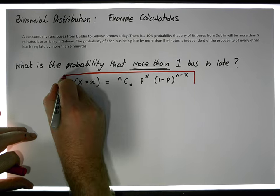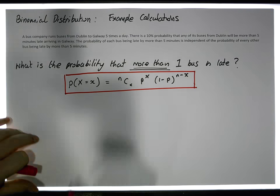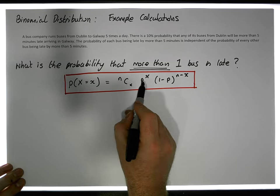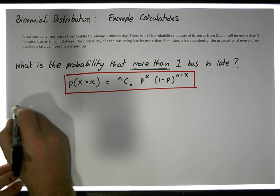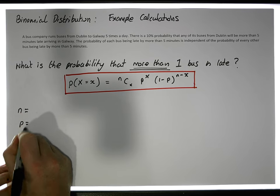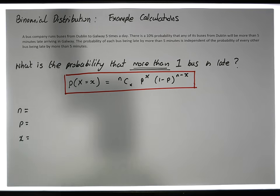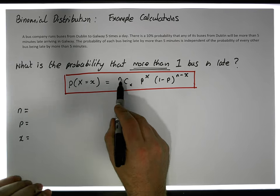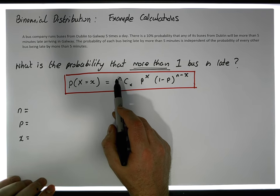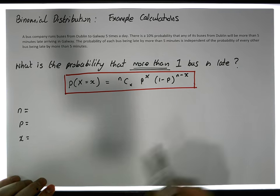The formula has specific values in it that we're going to explain now. It has N's, P's, and X's. So N is always the total number of observations — the total number of objects, trials, things performed, or things you're looking at.